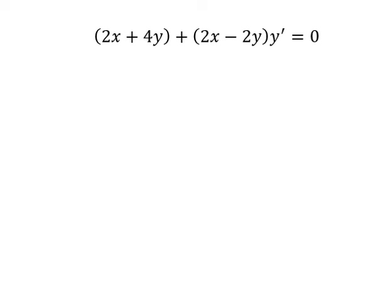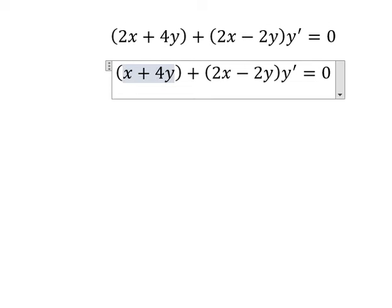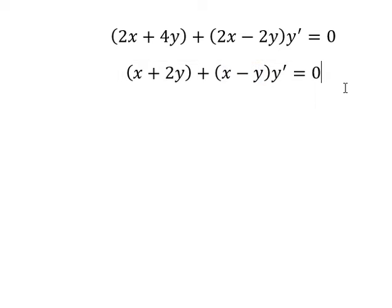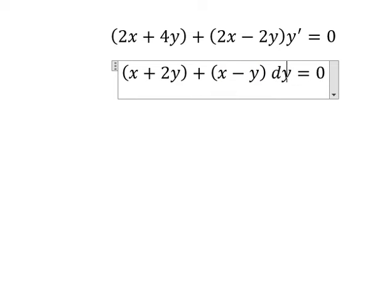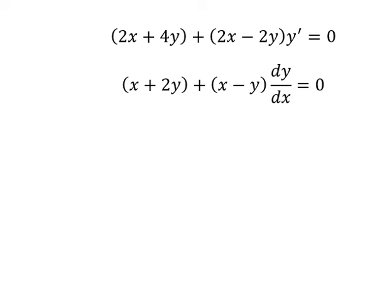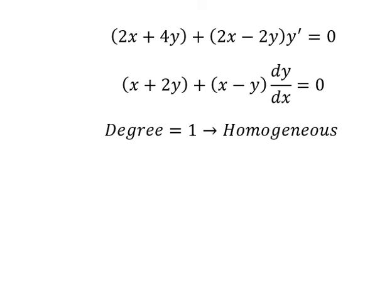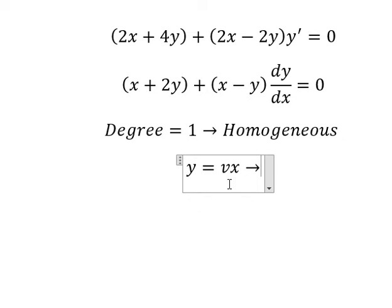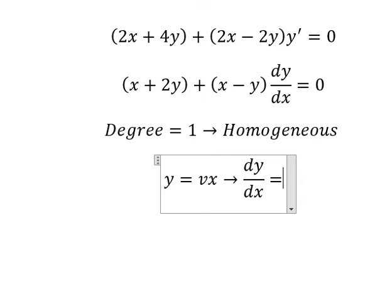Hello everybody. Today I want to talk about calculus — the topic is differential equations. I want to show you how to answer. We divide both sides by two, then change to dy over dx. So we have x and y — they are real numbers. This is about a homogeneous equation, so I will put y equals to vx. Then we do the derivative for both sides. For the derivative of v, we have number one.